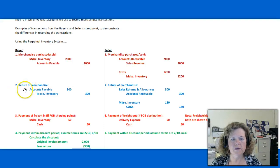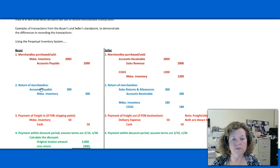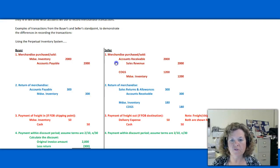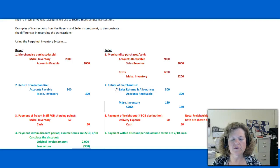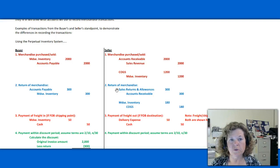The second transaction: say the buyer returned $300 worth of merchandise to the seller. We're going to just reverse part of the initial entry because we're sending some back and don't have as much merchandise as before. So we're going to debit accounts payable because we don't owe the seller as much, and the credit will be to merchandise inventory for $300. Over on the seller's side we're going to have two journal entries. The first entry is a debit to sales returns and allowances, which from your reading you should recognize as a contra revenue account that shows up in the calculation of net sales.